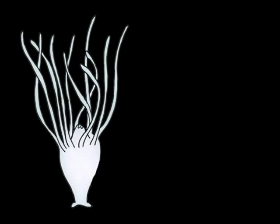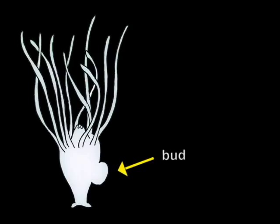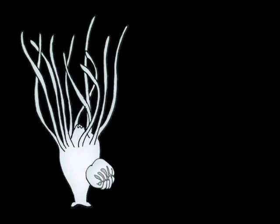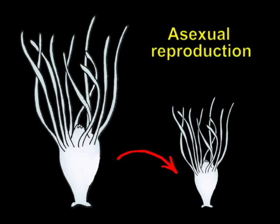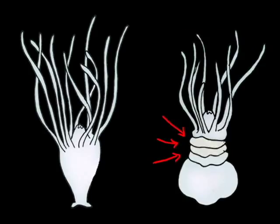Polyps produce other polyps by means of a longitudinal division of the body, or by giving rise to a dilatation along the body called a bud. The bud grows and develops mouth and tentacles. Later it detaches from the first polyp, originating a new individual. This reproduction form is defined as asexual.